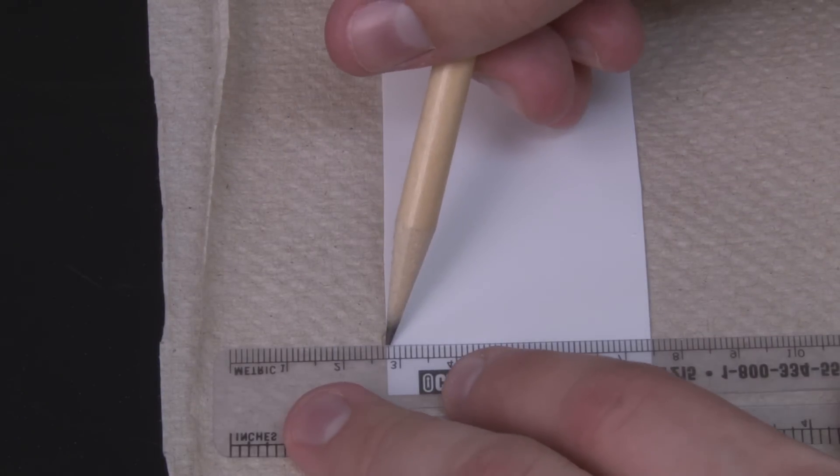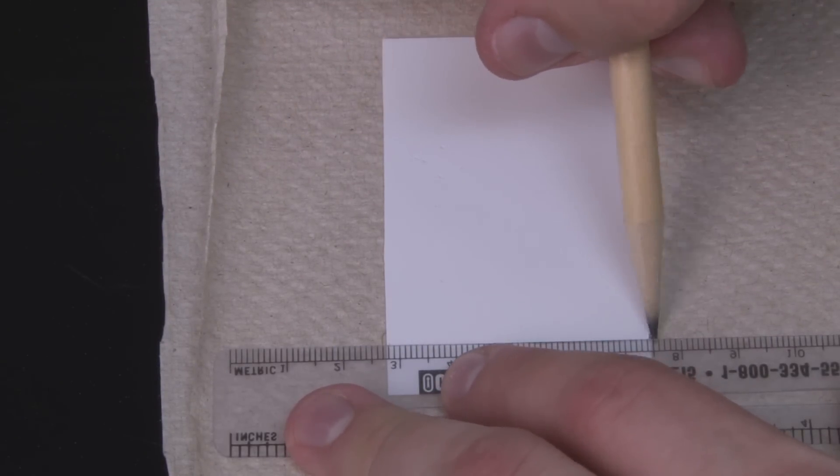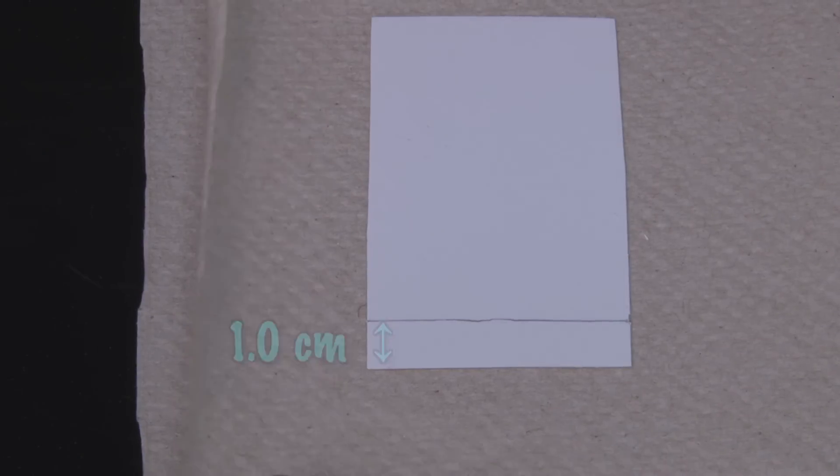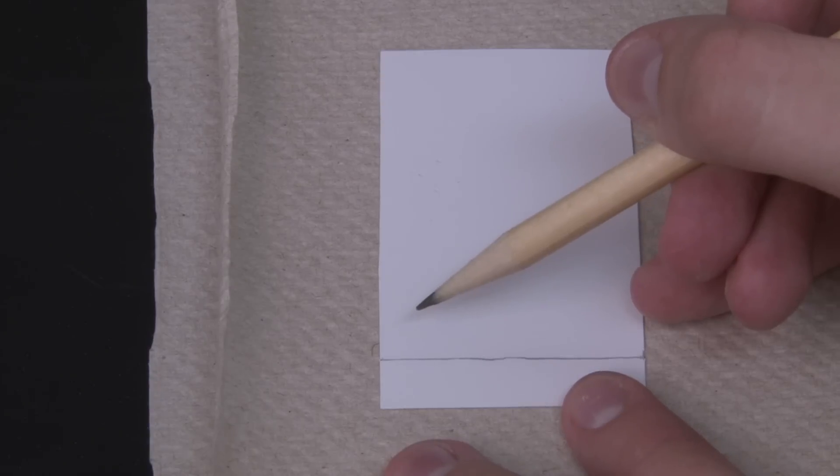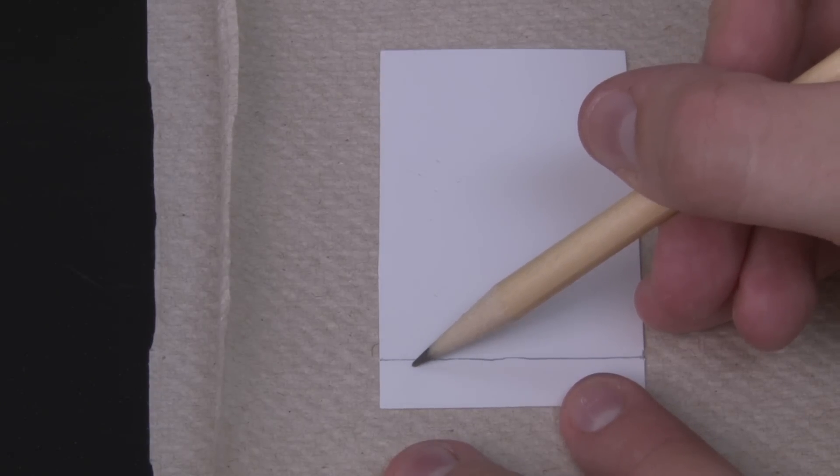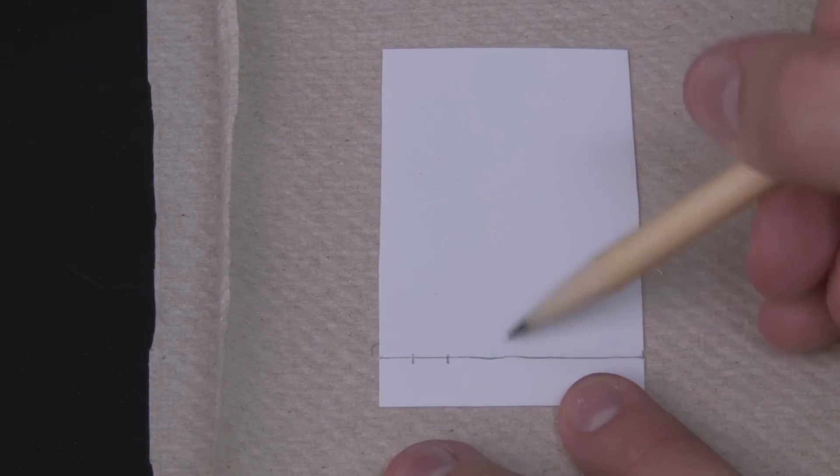Use a pencil to draw a light line on the powdery side about one centimeter from the bottom. Then draw six hash marks evenly spaced along the line, leaving a little extra room on the edges. If your TLC sheets are smaller, your instructor may have you use two sheets. These hash marks are where the samples will get applied.